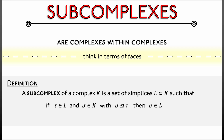That's a complicated if-then statement, so get the logic right. Group all of those terms together under the 'if' — they all have to hold — and whenever that happens, then sigma is contained in that subset L, meaning L is a subcomplex. Said more simply, L, thought of as an abstract collection of simplices, is itself a simplicial complex.